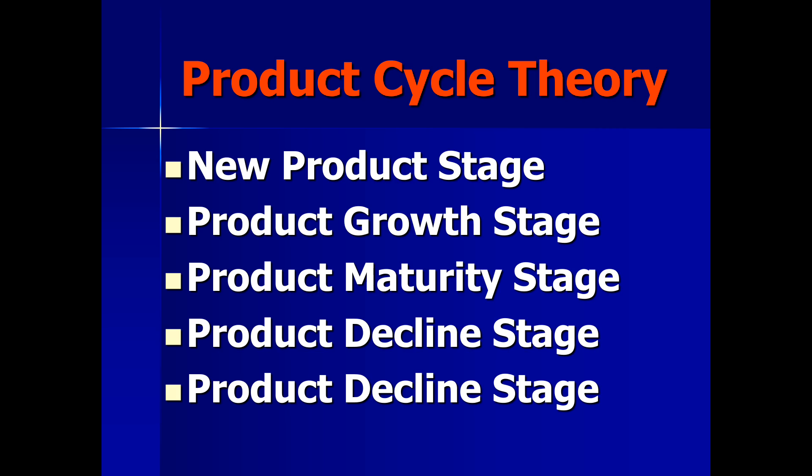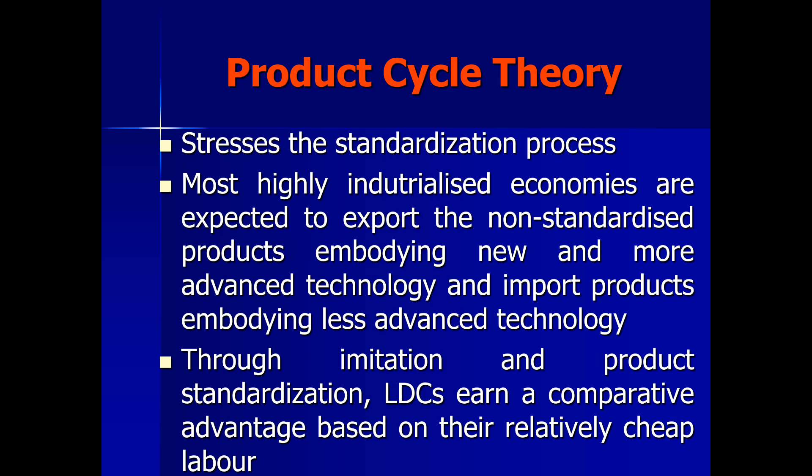So, initially the comparative advantage will lie with the developed country because only they can innovate a product. But ultimately this comparative advantage will shift to the developing country because they have cheaper labor and can produce the commodity using cheap labor with less costly production techniques. One version of the product cycle theory says that the life cycle of the product passes through five stages. At the new product stage, this product will be produced and consumed only in the innovating country. In the product growth stage, the innovating country starts exporting to the imitating country. Once the product reaches the product maturity stage, the product becomes standardized so that firms in less developed countries begin producing it. Once they start producing, production in the developed country declines — that's why the fourth and fifth stages are called product decline stages.